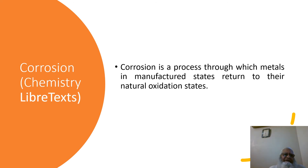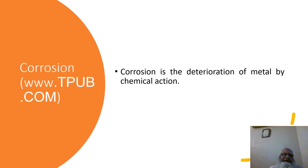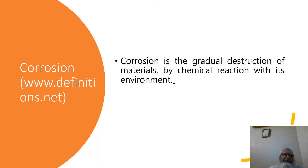This definition is taken from Chemistry LibreTexts, that states corrosion is a process through which metals in manufactured states return to their natural oxidation states. This definition comes from TPUB.com: corrosion is the deterioration of metal by chemical action. This definition comes from definition.net: corrosion is the gradual destruction of materials by chemical reactions within its environment.